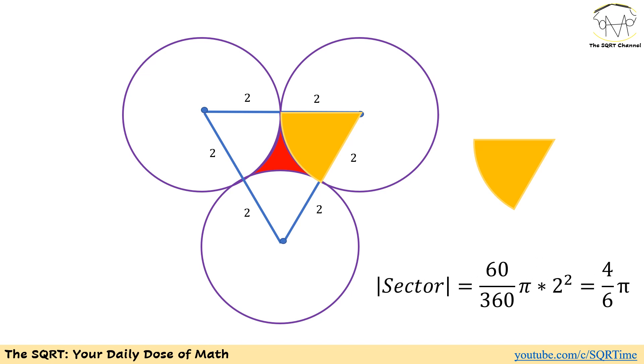Now we are going to focus to see how we can find the red area. As you can see, if we can find the yellow sector here, then it's going to be really easy to find the red area. What can we say about this yellow sector? First of all, we need to find what part of the circle includes inside this yellow sector.